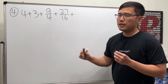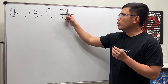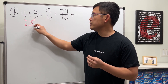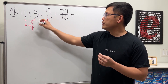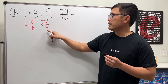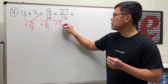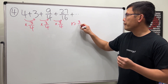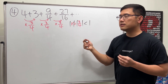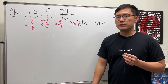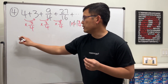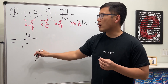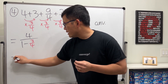For number four, we have four plus three plus nine over four plus 27 over 16 and so on. To find the common ratio, note that going from four to three is multiplying by three over four. Three times three over four gives nine over four, and nine times three over four gives 27 over 16. So the common ratio r is three over four. Since its absolute value is less than one, this series converges.